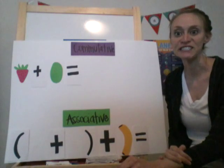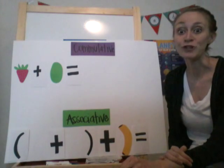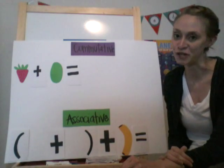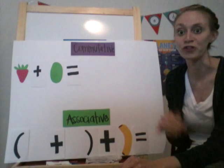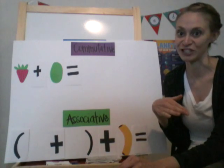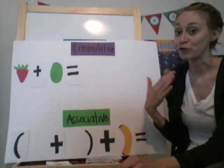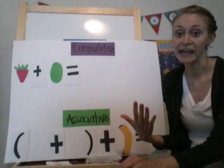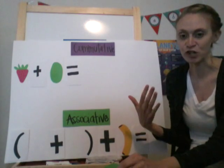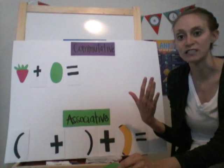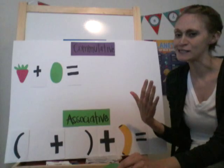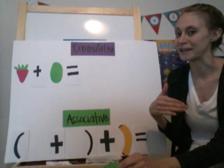Hello boys and girls. This video is going to show you some different strategies that you can use for both addition and multiplication. The first strategy we're going to look at is actually a property — it's called the commutative property, and it's kind of cool what it can do.